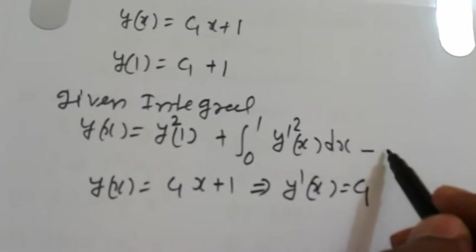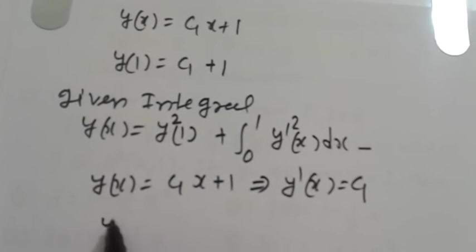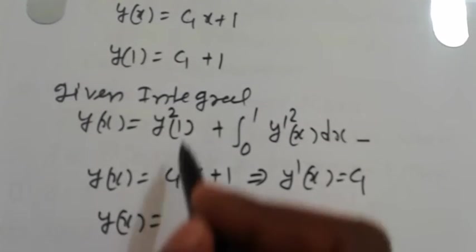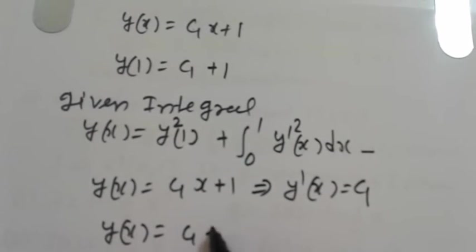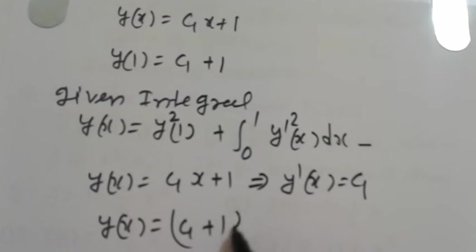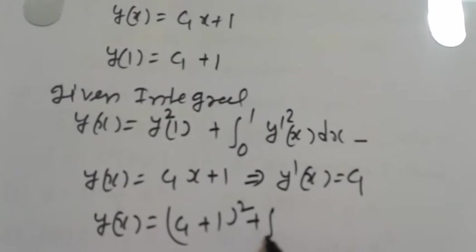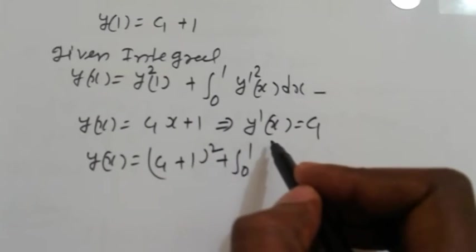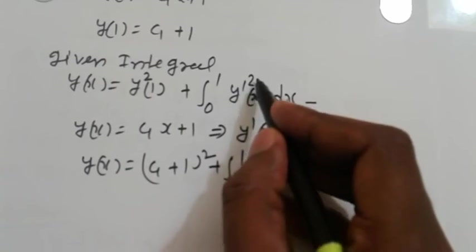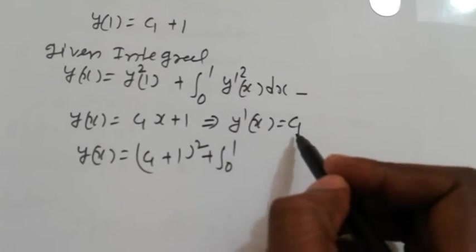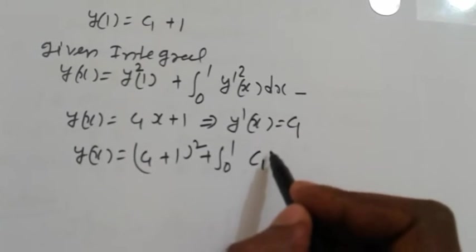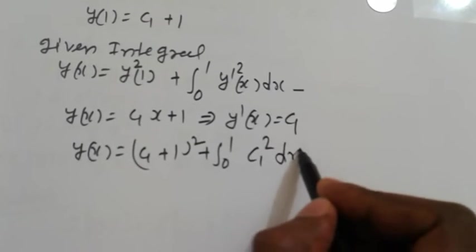So now we get here y(1) means (C₁ + 1)² plus integral from 0 to 1, and y'² (x) is here C₁, this is C₁² dx.